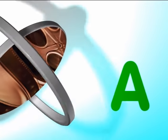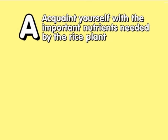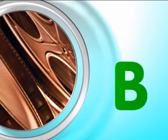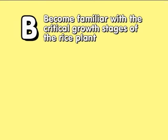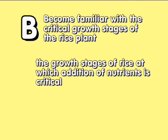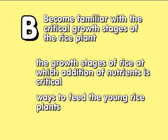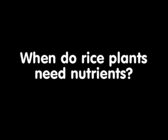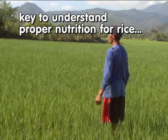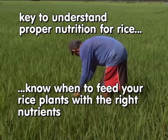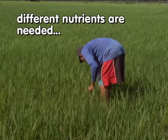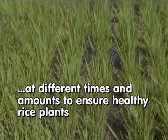Previously, we learned that the A of the ABC to proper nutrition is to acquaint yourself with the important nutrients needed by the rice plant. In this video, we will talk about the B of the ABC of proper nutrition. A key to understanding proper nutrition for rice is to know when to feed your rice plant with the right nutrients. Different nutrients are needed at different times and amounts to ensure healthy rice plants.